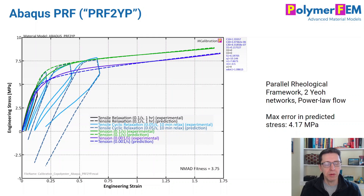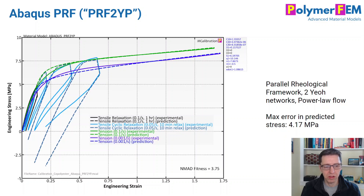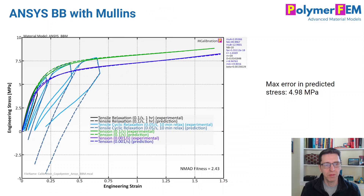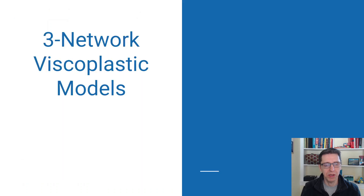How about the Abaqus Parallel Rheological Framework PRF model — a two-network version called PRF2YP? It is essentially similar to the Bergstrom-Boyce model, so it's not going to be great either — the max errors are not good. The ANSYS version of the BB model is very similar; same basis, similar predictions. The average error is good but the max error is not. Activating Mullins damage still doesn't save us. Two networks are simply not good enough.